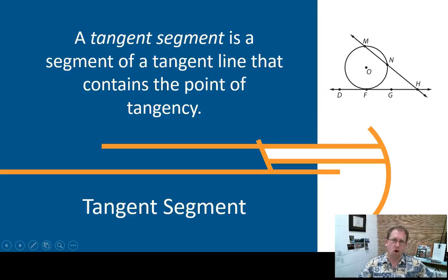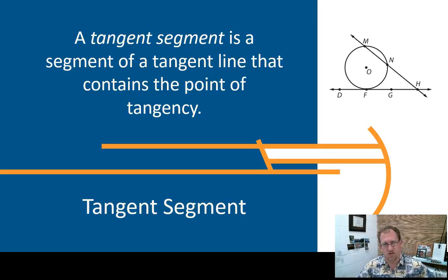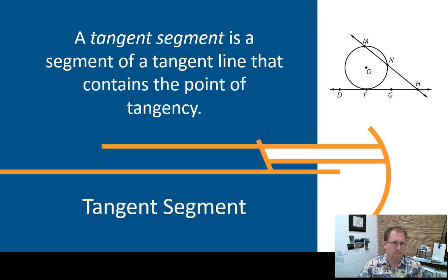The part of a line that contains the point of tangency is the tangent segment — it's really a minor difference. The entire line is the tangent line, and the tangent segment is the part of that line that has the point of tangency in it. It's a nuance, but it's a vocabulary term you should be familiar with.